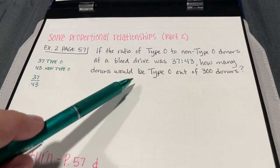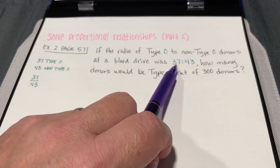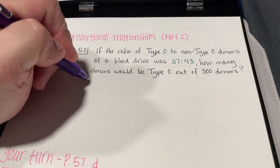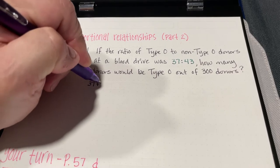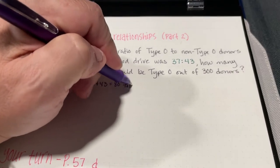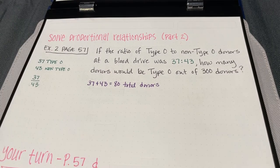What we want to find out is how many donors would be type O if there were 300 donors total. First, let's figure out the total so far: 37 type O plus 43 non-type O gives us 80 total donors.